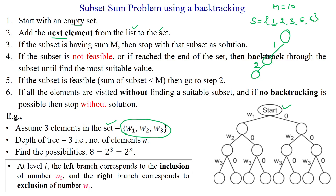After selecting those values, the sum is 3, which is less than or equal to m — yes, we can go ahead. Now we add element 3, so the sum is 3 + 3 = 6, which is less than or equal to 10 — true, so we add the next element 5. Now 6 + 5 = 11, which is not less than or equal to m, so it is false — this subset is not feasible. We apply backtracking and check for other possibilities.